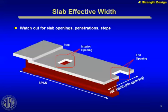Be aware of situations that could interrupt your composite action. Sometimes engineers forget to worry about this. If you're doing a condominium or a hotel where there could be a lot of chases or pipe chases or floor openings, that could interrupt your composite beam capacity because you've cut away your effective flange. You'll need to do some special detailing around stair steps to ensure you have a composite flange that's really effective.